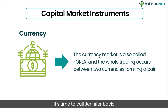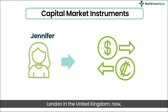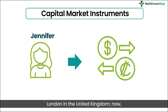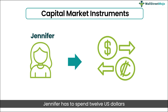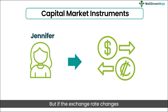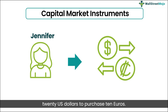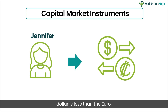Let's call Jennifer back. Suppose Jennifer, who lives in New York, visits London in the United Kingdom. Sadly, Jennifer cannot spend her American dollars in London because it is invalid there. Suppose the exchange rate between euros and US dollars is 1.2 dollars for every euro — Jennifer has to spend 12 US dollars to buy an item worth 10 euros. But if the exchange rate changes and now 1.2 dollars are worth 1 euro, Jennifer has to spend 20 US dollars to purchase 10 euros, because the value of the US dollar is less than the euro.